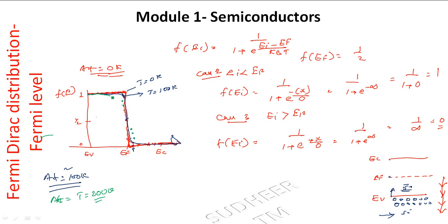Looking at the energy distribution plot, we can observe electrons above and below the Fermi level with corresponding probability values. This corresponds to T equal to 200 Kelvin on the Fermi distribution plot.